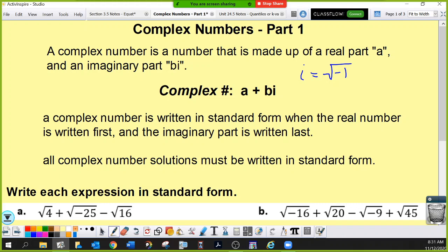If you put a number in front of i, like 2i or 3i, it means you had two of those square roots of negative one, or three of those square roots of negative one. It's called standard form when the real number is written first and the imaginary part is written last. All complex number solutions must be written in standard form.